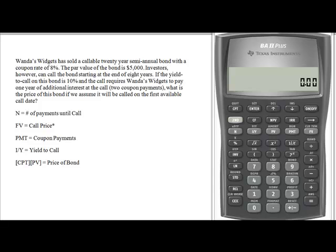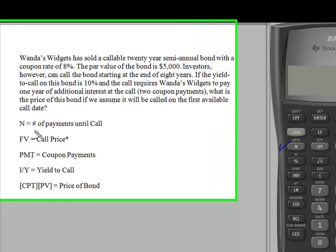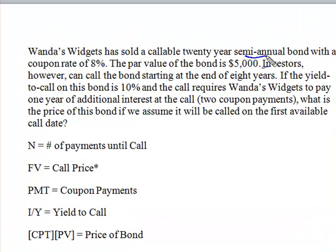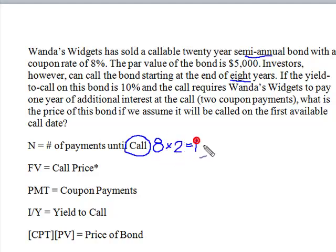These problems take a little work ahead of time before you can start to solve them. We're going to collect all of the time value of money key information that we need. The first thing I need to know is N, and N is simply the number of payments till the call. With a semi-annual bond, we get two payments a year. They're going to call at the end of 8 years, so the number of payments received is going to be 16. N, number of payments till the call, is 16.